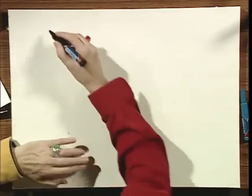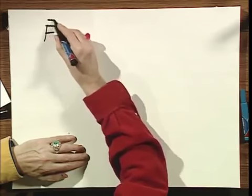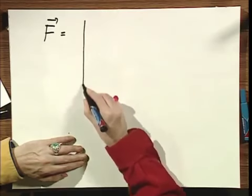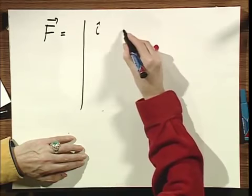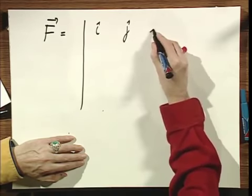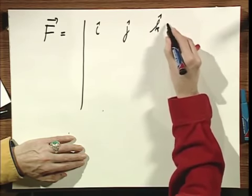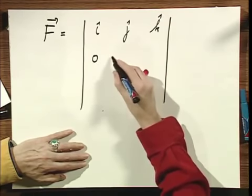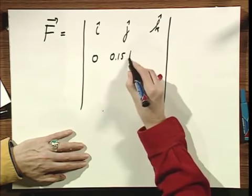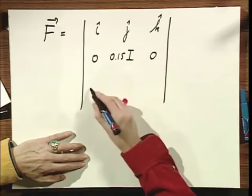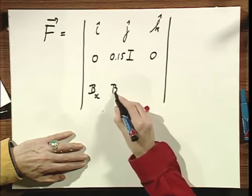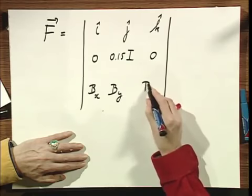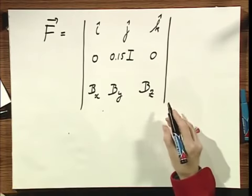The cross product. F becomes i, j, k, 0, 0, 0.15 times I, 0, Bx, By, and Bz.